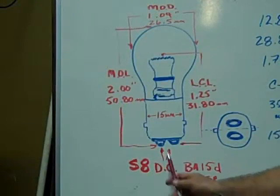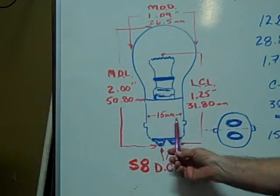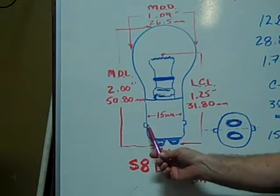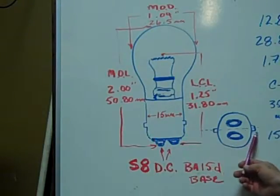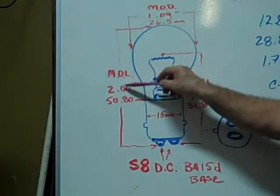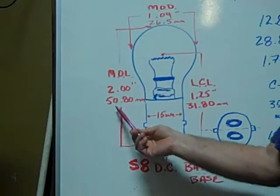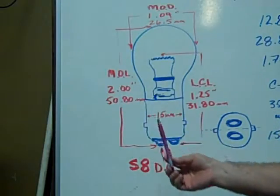The S8 DC or dual contact BA-15D base miniature bulb has a base diameter of 15 millimeters and the pins are 180 degrees from each other on either side of the base. The maximum overall length is 2 inches or 50.80 millimeters.